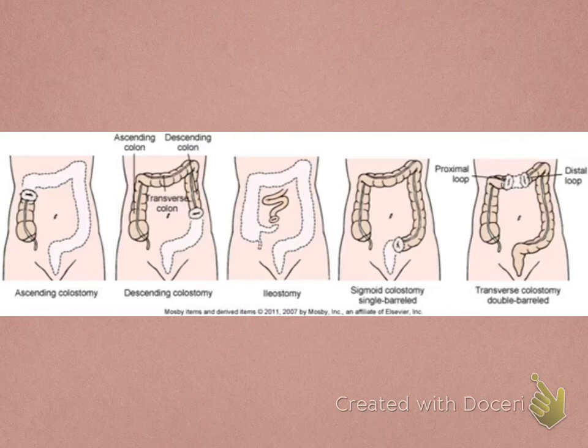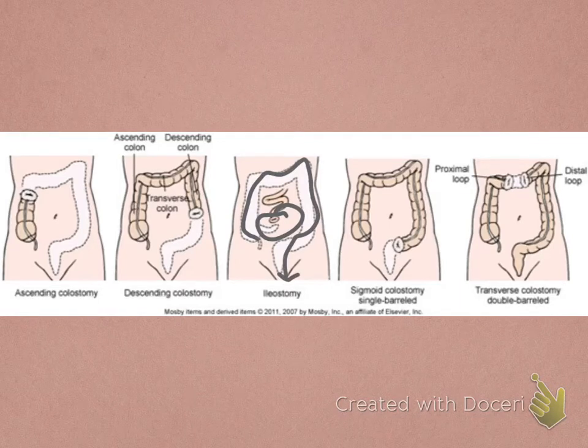An ileostomy is developed in the small intestine, so stool only travels that far and never moves through the colon. The stool coming out of an ileostomy is going to be liquid, foul smelling, and very caustic to the skin. Because it's higher in the GI system, the patient has less opportunity to absorb the nutrients they've ingested.